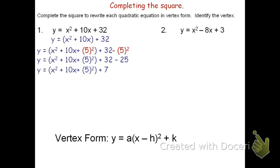The last step is to rewrite the quantity x squared plus 10x plus 5 squared into factored form, or the area as a product. We can simplify x squared plus 10x plus 5 squared as the quantity x plus 5 squared. We still have the plus 7 at the end. Using the formula y equals a times the quantity x minus h squared plus k, I can see that the horizontal shift is negative 5, or 5 units to the left, and the vertical shift is 7 units up. The vertex is therefore at negative 5 comma 7.